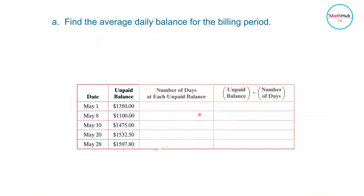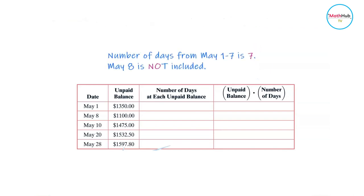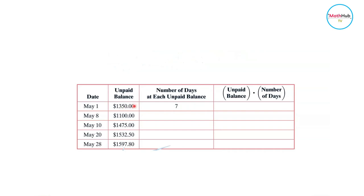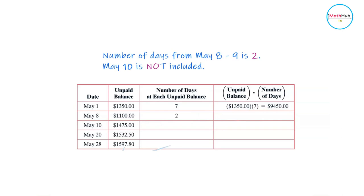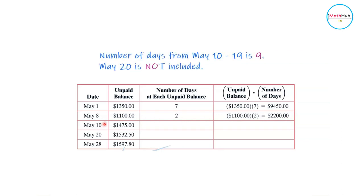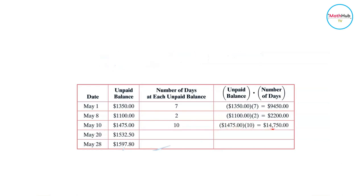On May 28 another purchase of $65.30 was made, bringing the total balance to $1,597.80. To calculate the average daily balance, we extend the table by adding two columns: one showing the number of days at each unpaid balance, and one showing each unpaid balance multiplied by the number of days it was outstanding. From May 1 to May 8 is 7 days, so $1,350 × 7 = $9,450. From May 8 to May 10 is 2 days, so $1,100 × 2 = $2,200. From May 10 to May 20 is 10 days.